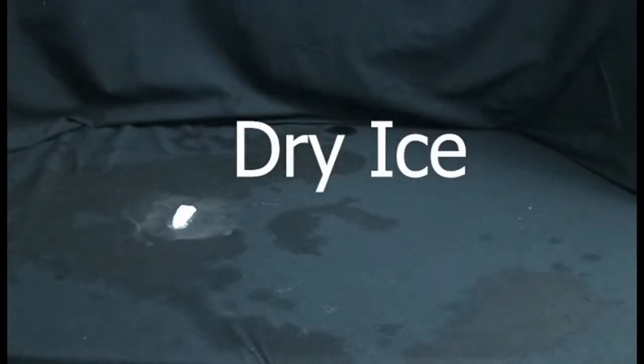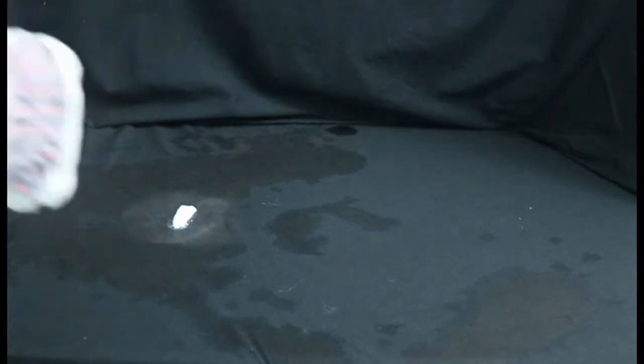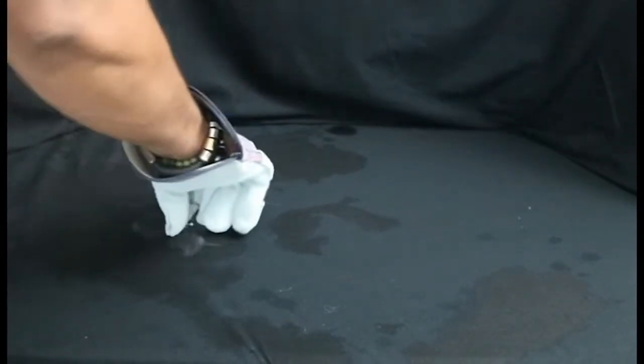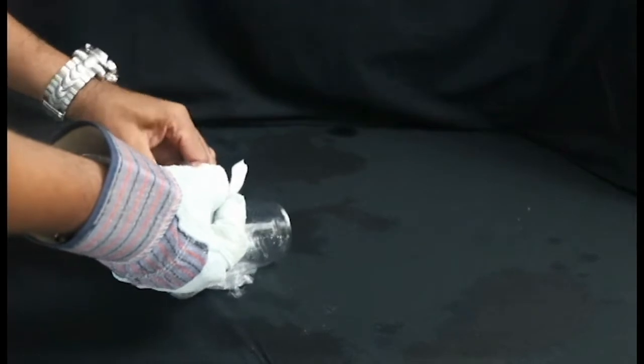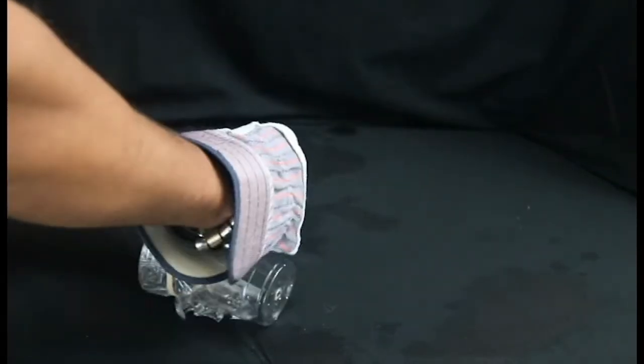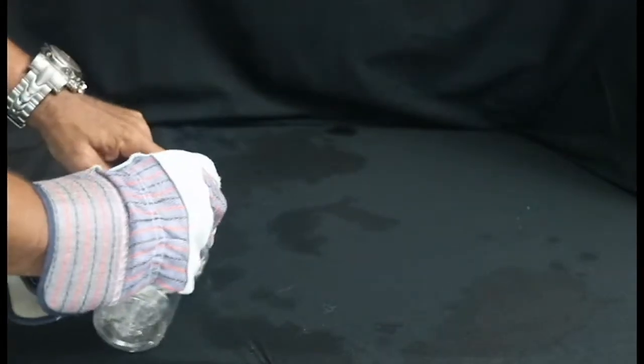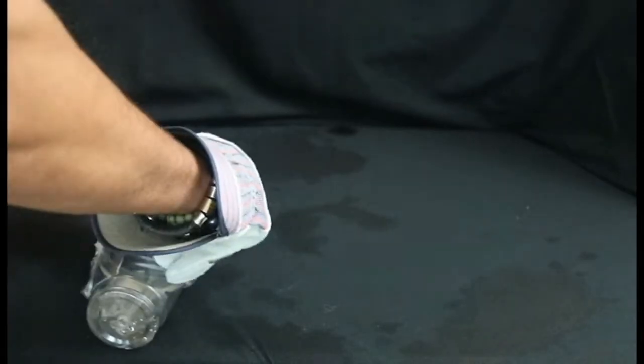Next, you need your gloves to actually pick up the piece of dry ice. Dry ice is frozen carbon dioxide that's negative 78 degrees Celsius. You want to place it inside of your cup that you just created with the film and the rubber band.